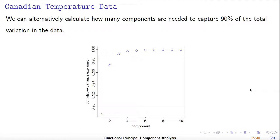We can calculate the cumulative variance explained for the data. The vertical line at 90% and at 99% shows that for the Canadian temperature data, if we use just three FPCs, it will explain over 99% of variance. Using two FPCs covers over 95% of the variation.